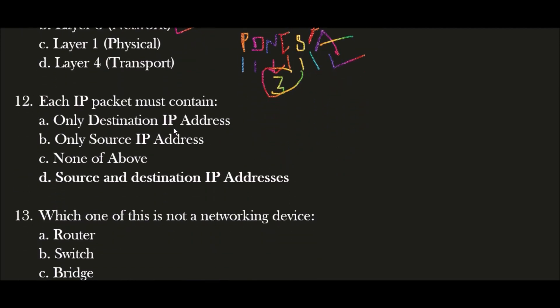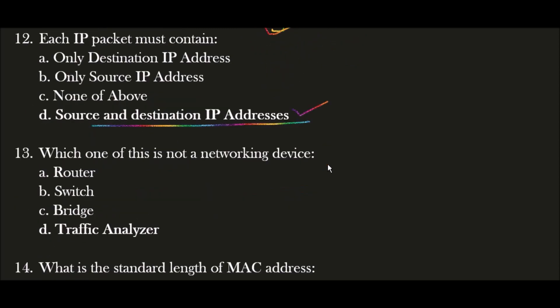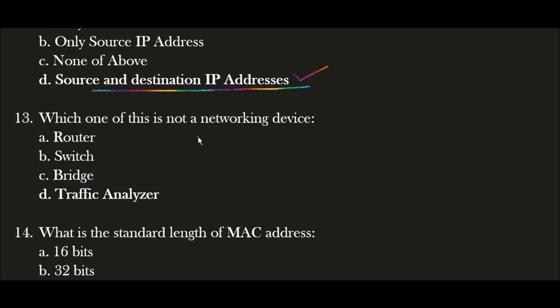Next question: What must each IP packet contain? The correct answer is option D — source and destination IP address. Each and every IP packet must contain both source IP address as well as destination IP address. Next question: Which one of these is not a networking device? The correct answer is option D — Traffic Analyzer. Traffic Analyzer is not a networking device; router, switch, and bridge are all networking devices used to connect different networks.